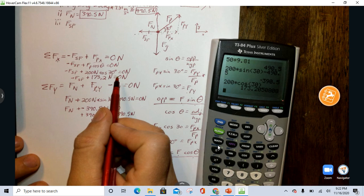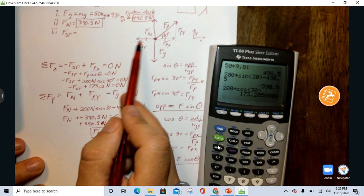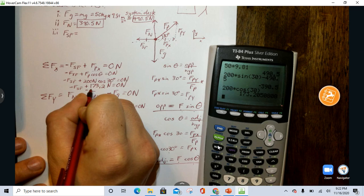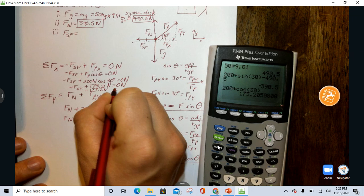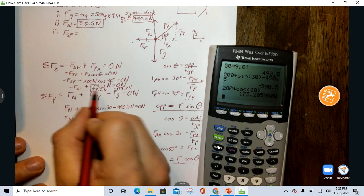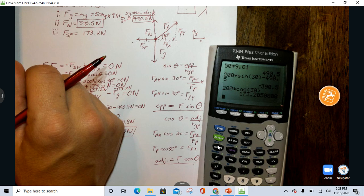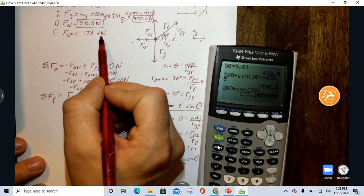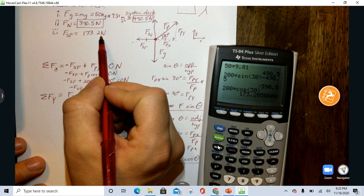And so, I get, if I subtract this over, the force of static friction, the magnitude of it. I'm going to subtract this to both sides, and then I'll divide both sides by a negative one. And then I will get that this is 173.2 newtons. You could say that it's also 173.2 newtons in the negative direction as well.